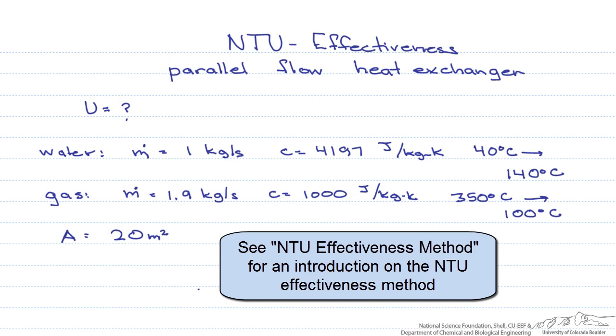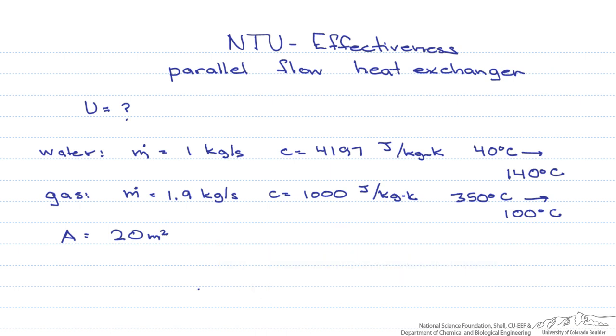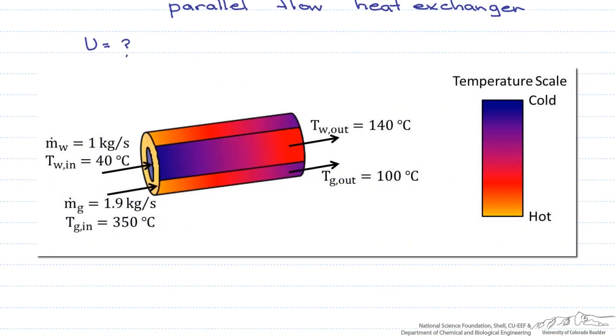In this screencast we are going to use the NTU effectiveness method for a parallel flow heat exchanger to find the overall heat transfer coefficient U. In this concentric heat exchanger we have water that comes in at 40 degrees C and is heated up to 140 degrees C by hot gases that come in at 350 degrees C.